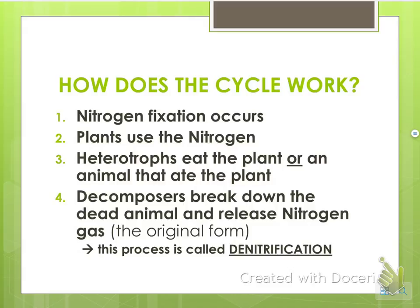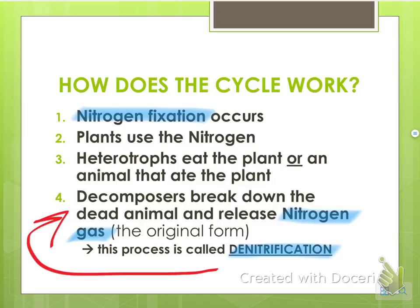Going back to talk about the nitrogen cycle: nitrogen fixation occurs first because we can't use the nitrogen directly. Once fixation occurs, plants use this nitrogen. Then heterotrophs like ourselves eat the plant, or eat an animal that ate the plant. Eventually when we die, decomposers break down our body and release nitrogen gas back into the atmosphere. This process is called denitrification — decomposers breaking down the dead animal and releasing nitrogen gas back into the atmosphere.